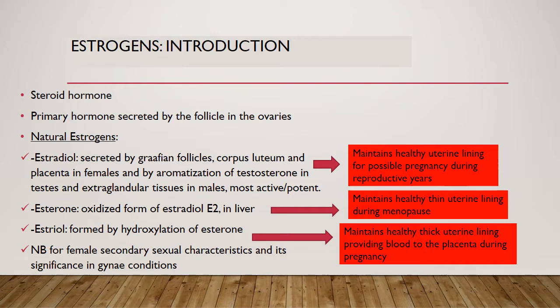Estradiol maintains a healthy uterine lining for possible pregnancy during the reproductive years. Estrone is the oxidized form of estradiol in the liver, which maintains a healthy thin uterine lining during menopause. Estriol is formed by the hydroxylation of estrone and maintains a healthy thick uterine lining which provides blood to the placenta during pregnancy. Estrogen is especially important for the development of female secondary sexual characteristics.